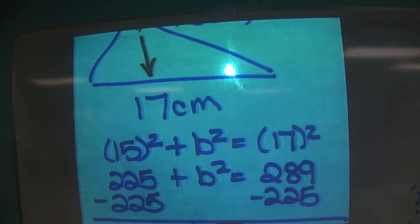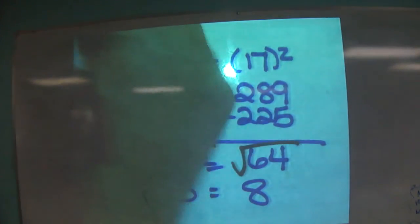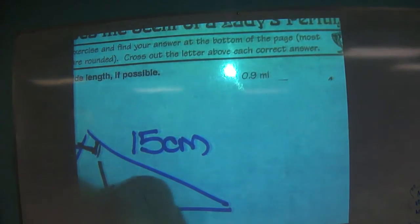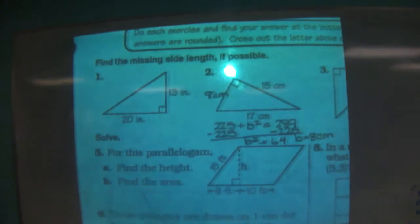Square root of B squared, square root of 64. So what's B? B equals? What's the square root of 64? 8. So our missing side is 8 centimeters. Yeah, it is. That was a hard one.